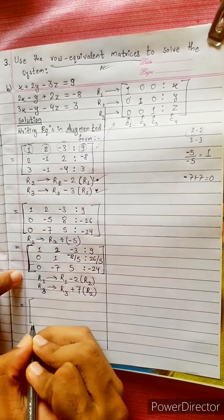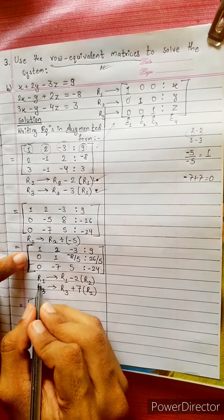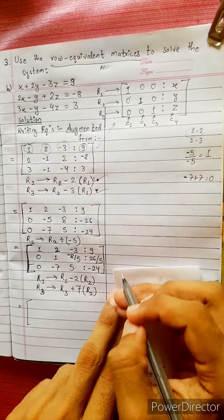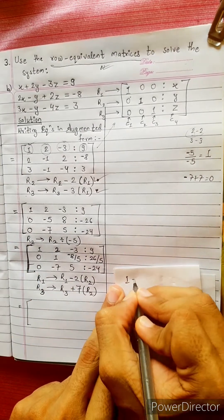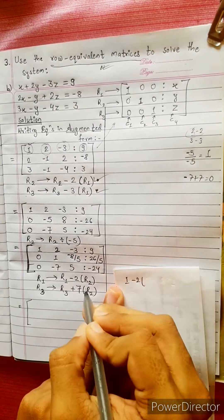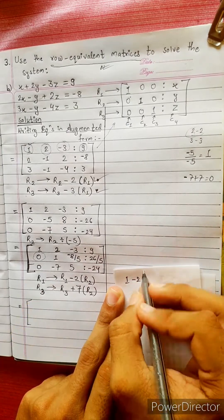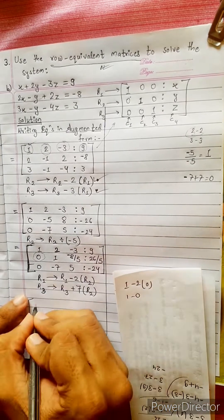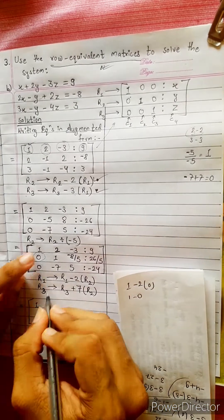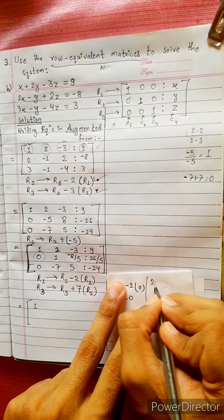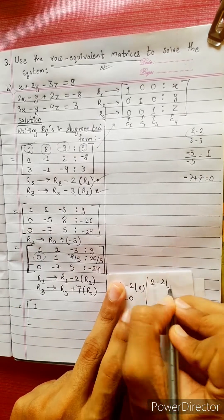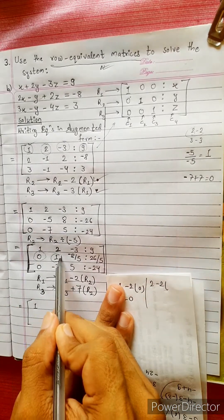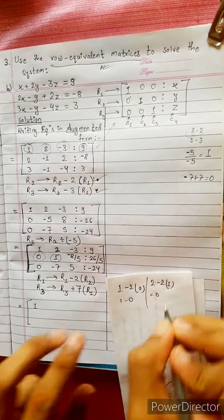R1 plus 1. Then 1 minus 2 times R2 equals 0. 1 minus 0 equals 1. 2 minus 2 times R2 equals 1. 1 minus 2 times R2 equals 0.